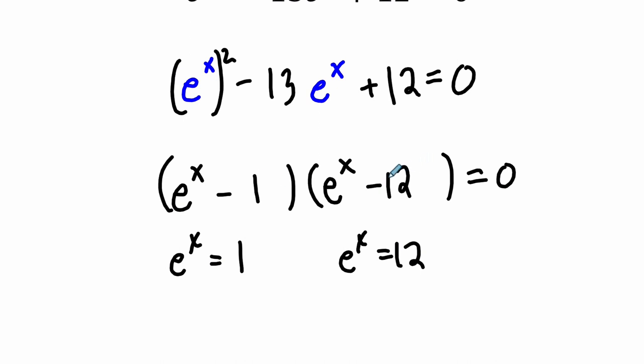If e to the x is either 12 or 1, you would get a product of 0, right? 12 minus 12, that's 0, and times anything over here is 0. If e to the x is 1, 1 minus 1 is 0, and then multiply that to 0.